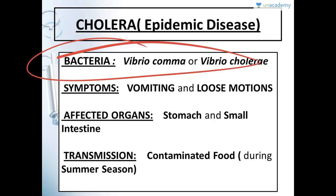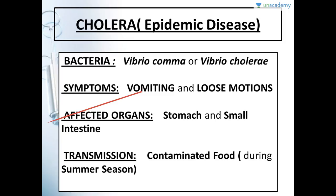The symptoms of cholera are excessive vomiting and loose motions. The person cannot sit for even 30-35 minutes without vomiting. As soon as the person has eaten anything, they will run for either vomiting or loose motions. The affected organs for cholera are the stomach and small intestine. Whenever the small intestine gets infected, vomiting and loose motions will be there; if infection occurs in large intestine, pain will be there.